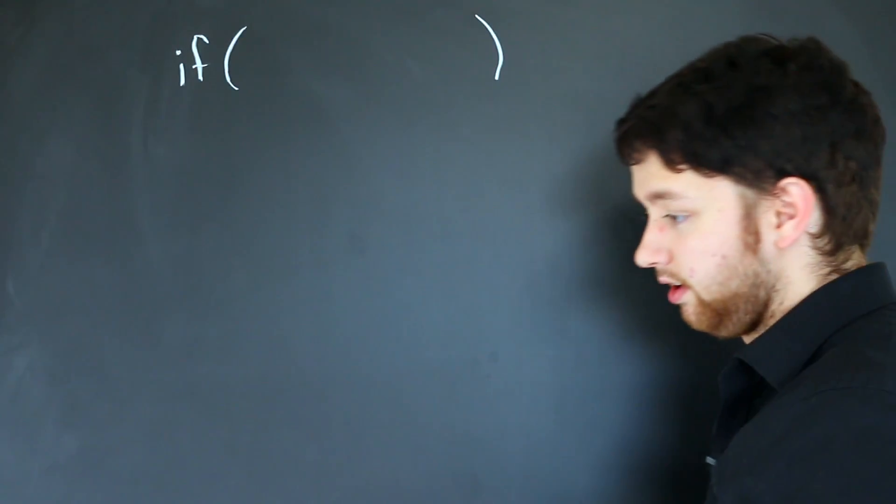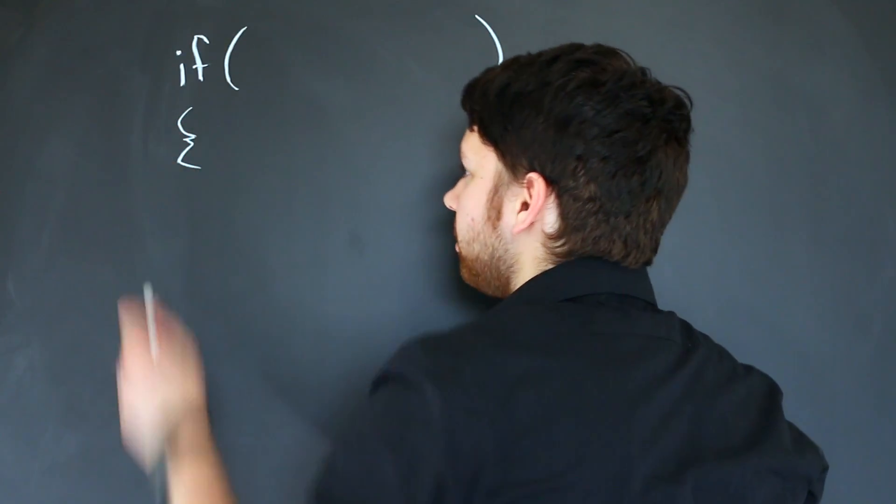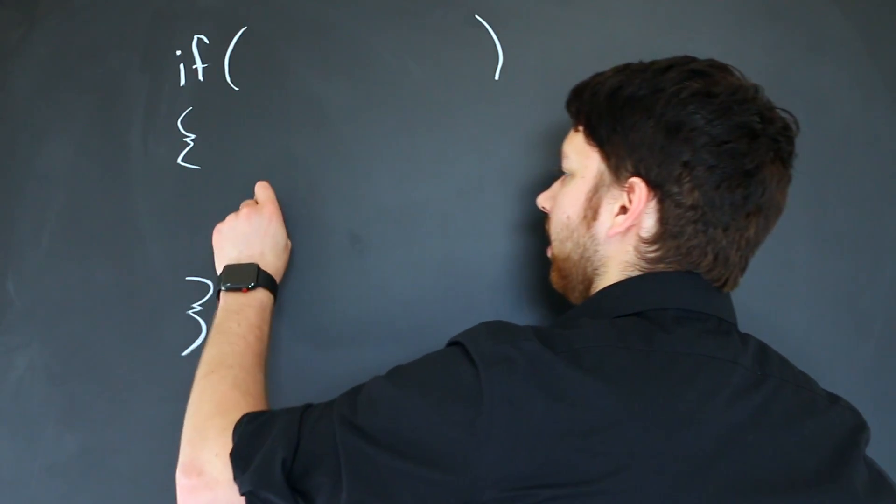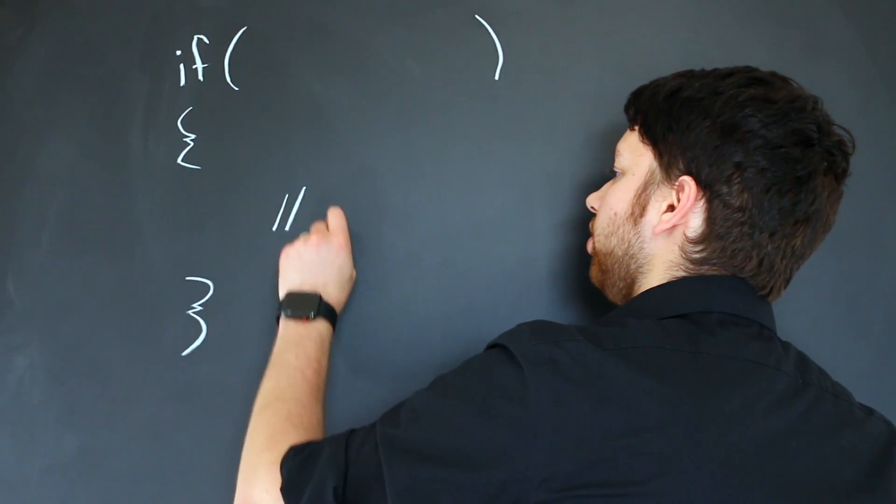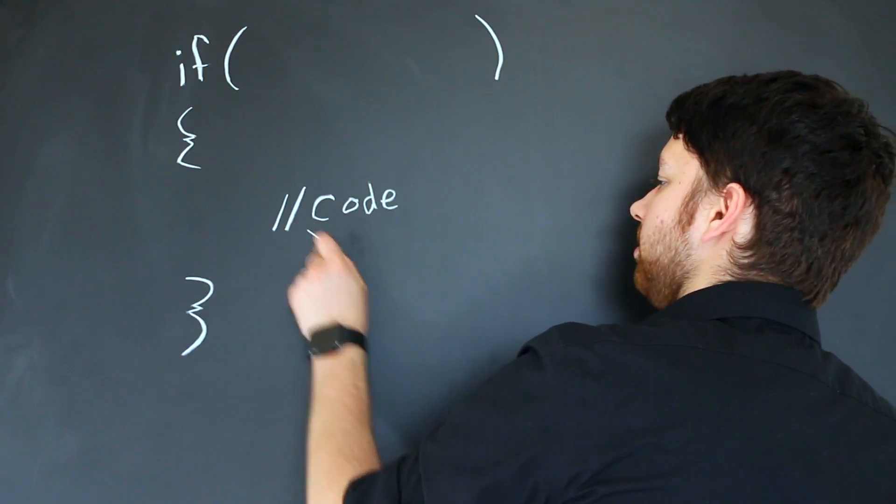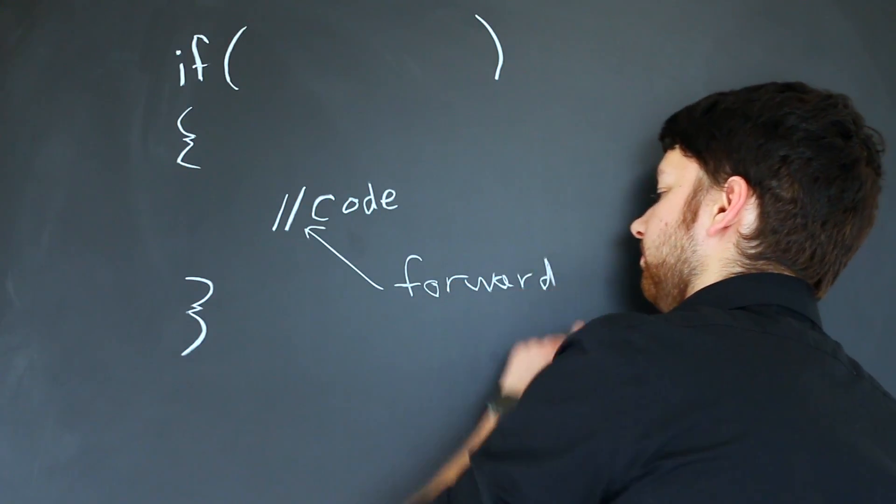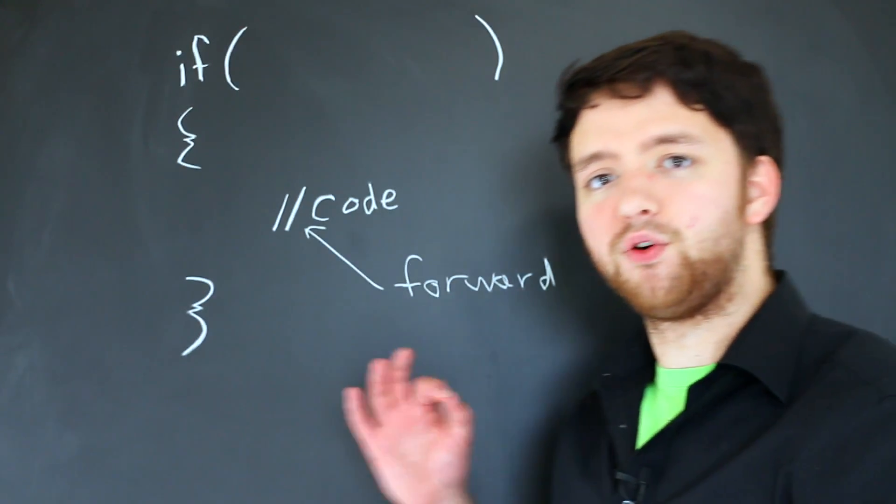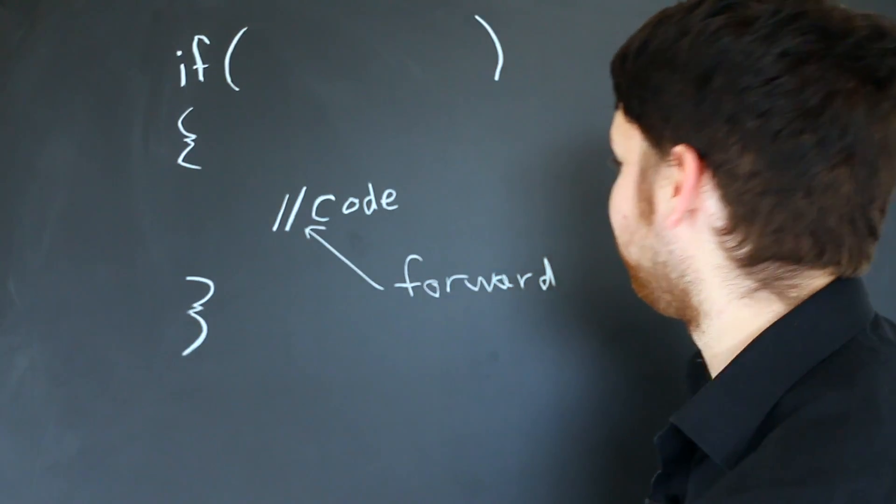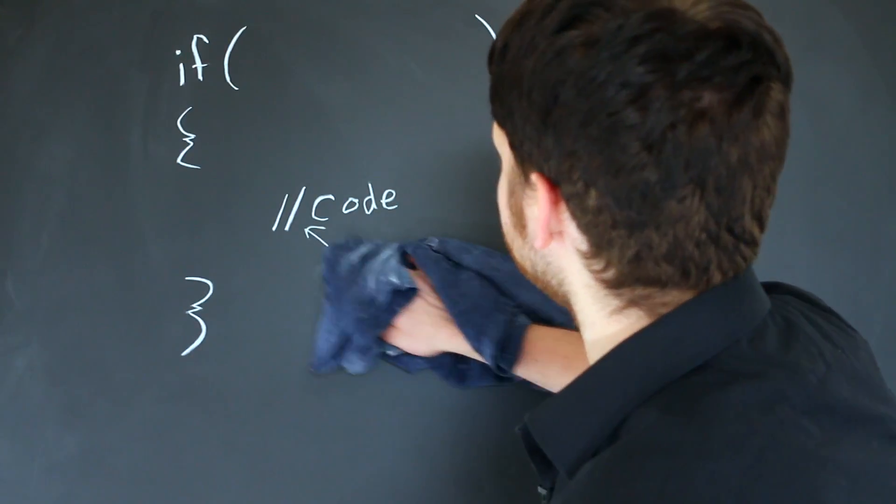Then what you do is you use a left curly brace and then a right curly brace, and then inside of here you can put your code. By the way, these are called forward slashes, not backslashes. They're forward slashes. That's a big one.